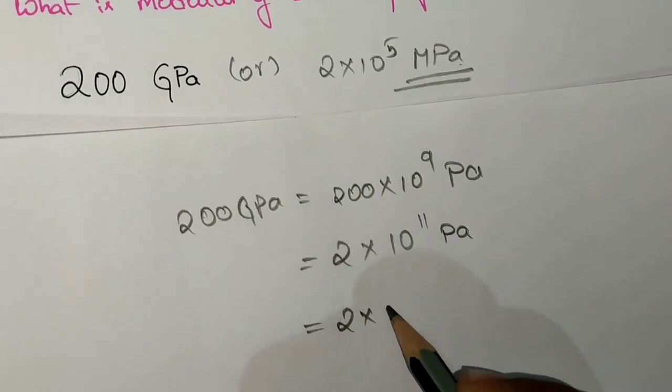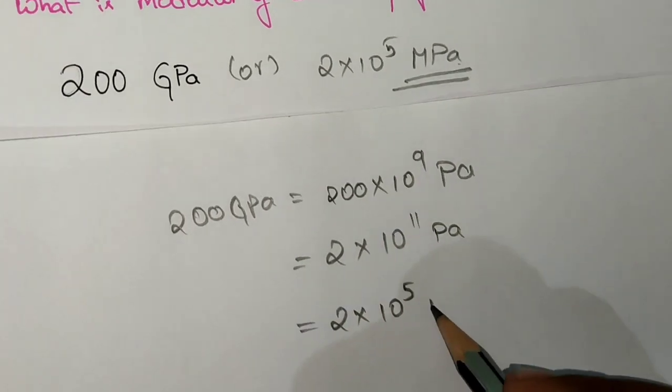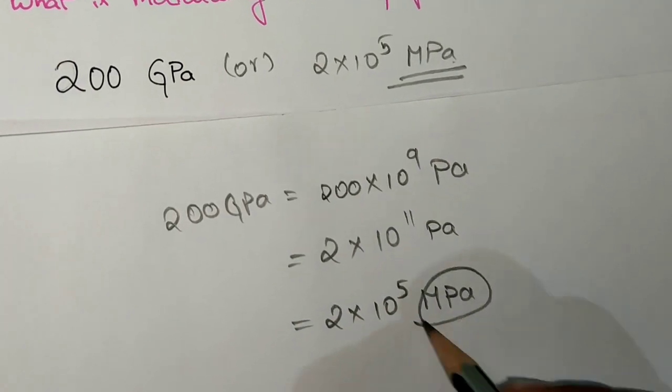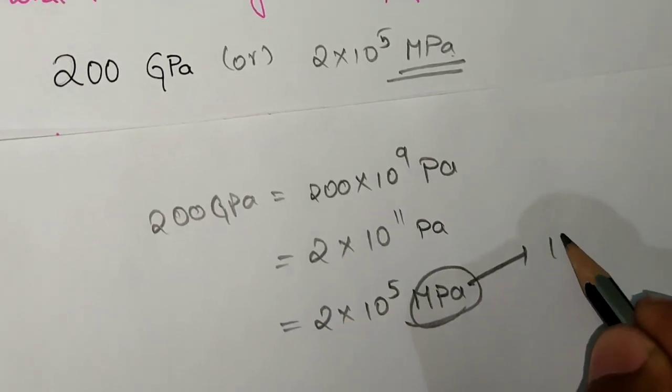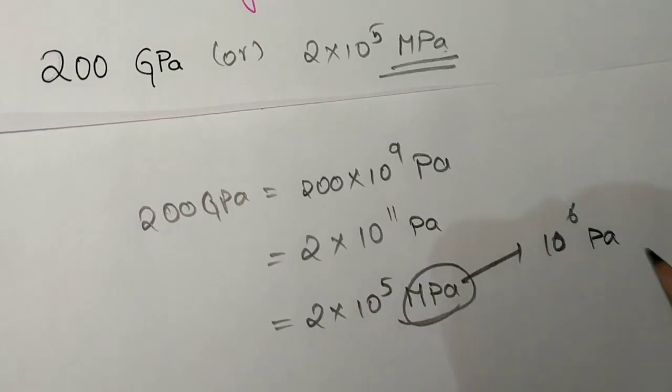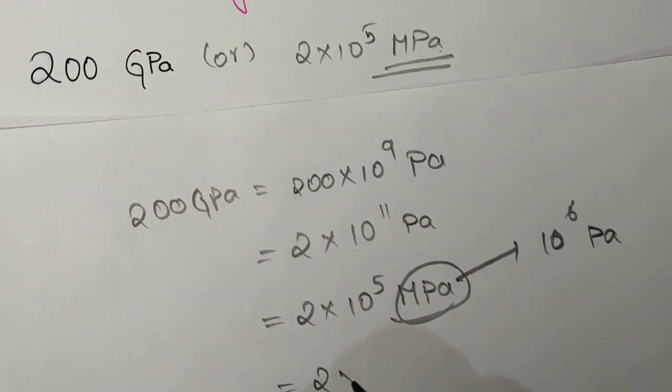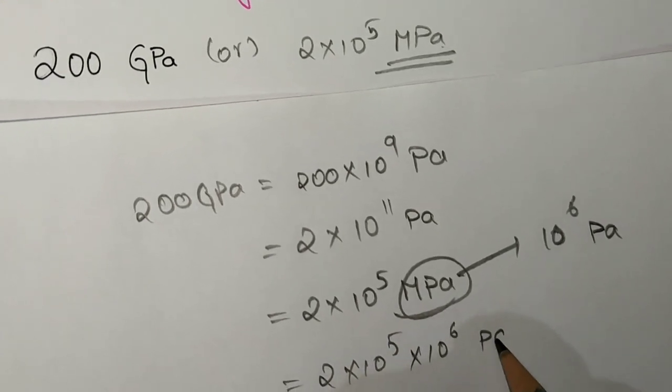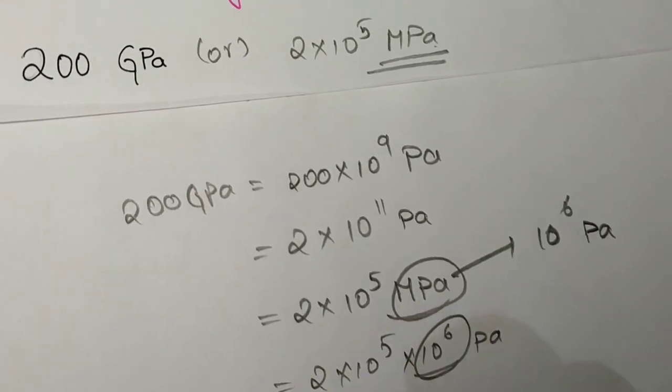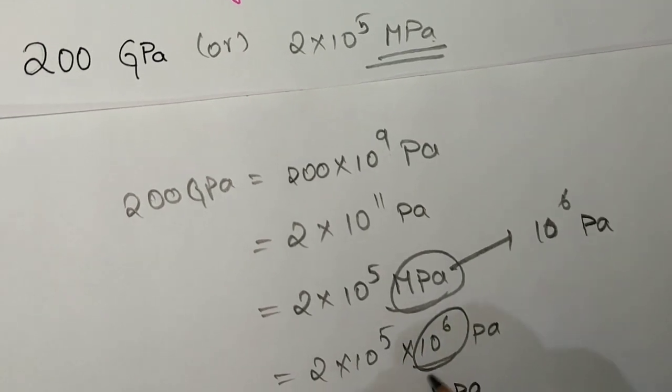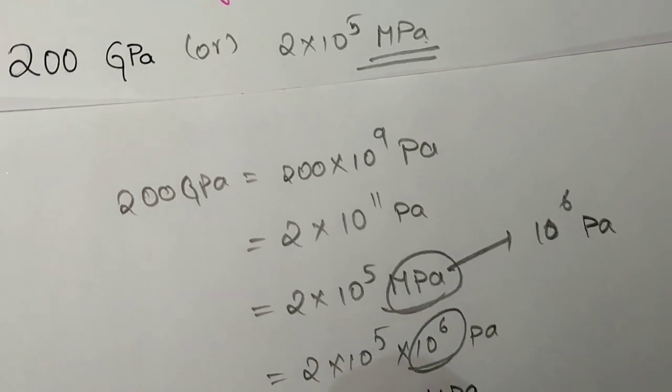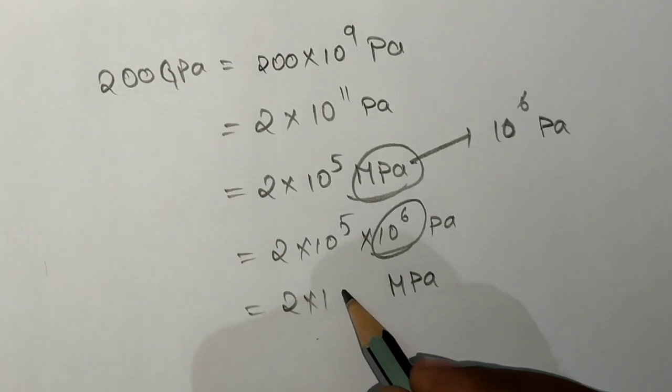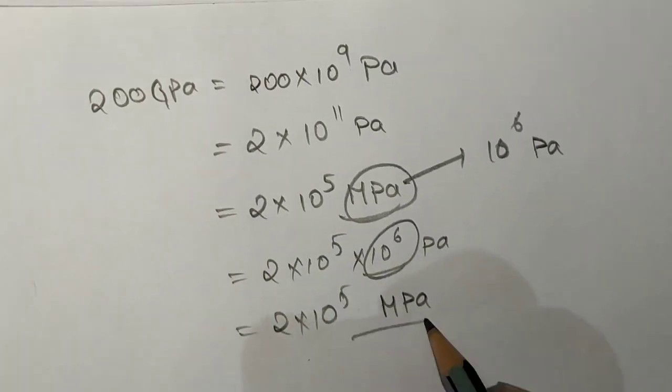We can write this as 2×10^5×10^6. Since 1 megapascal equals 10^6 Pascals, the 10^6 represents megapascals. That's why we can write 200 gigapascals as 2×10^5 megapascals.